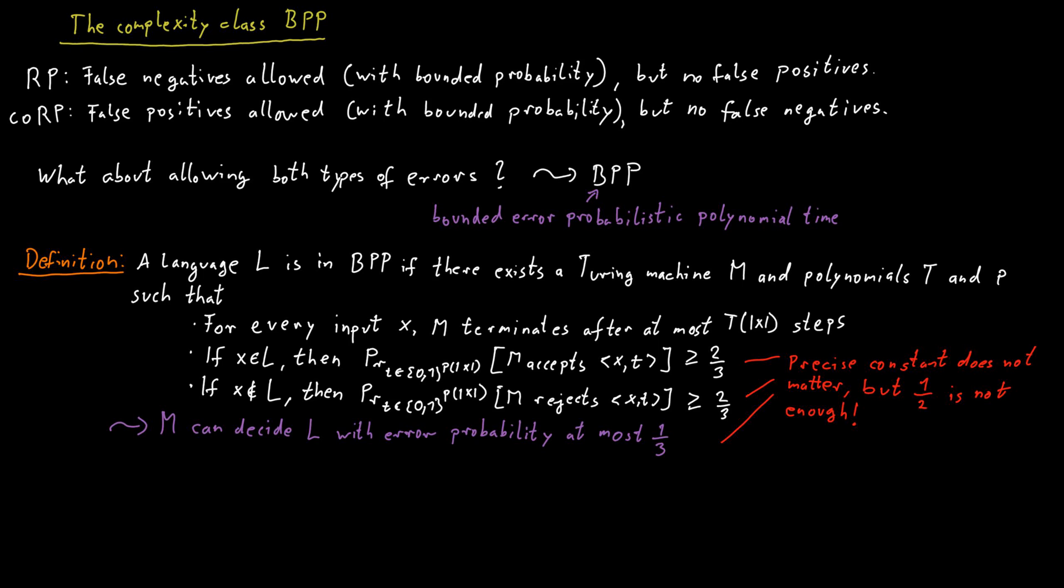We would say that if a word is in the language, we should accept with a probability of at least one-half. And if the word is not in the language, we should reject with a probability of at least one-half.